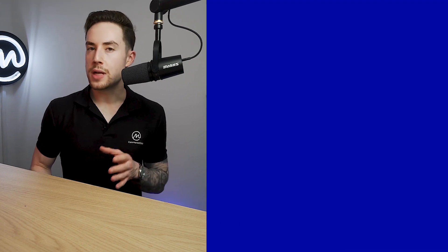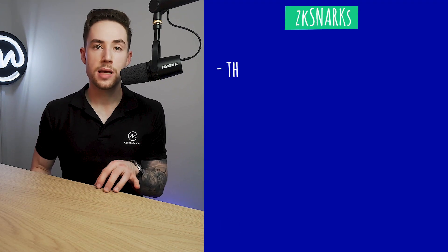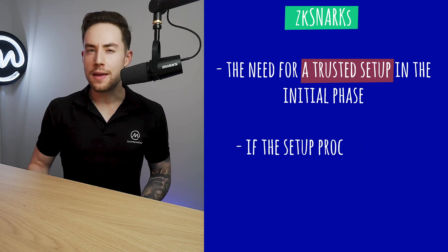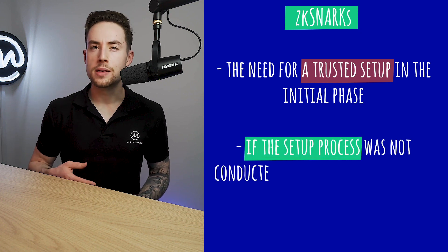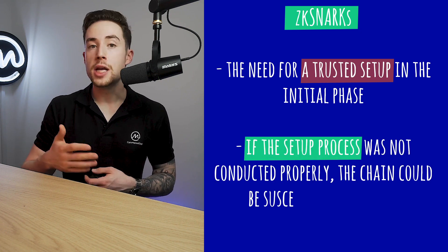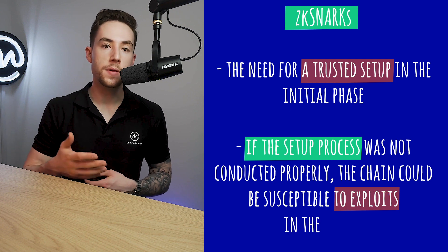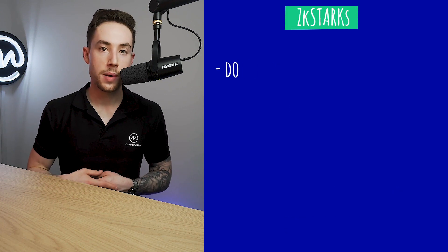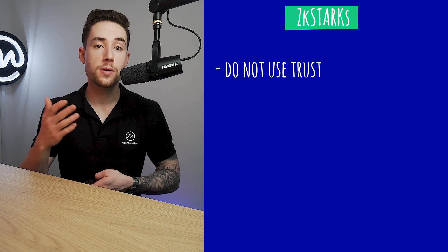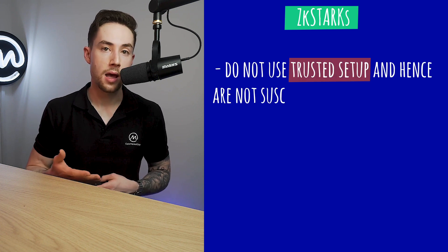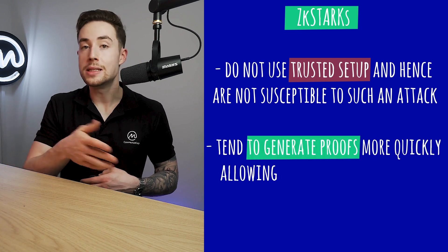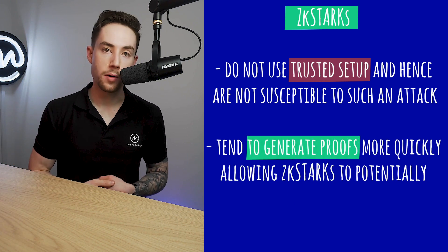One of the major downsides to ZK Snarks is the need for a trusted setup in the initial phase. If the setup process was not conducted properly, the chain could be susceptible to exploits in the future from malicious parties. ZK Starks do not use a trusted setup, and hence they are not susceptible to such an attack. Moreover, ZK Starks tend to generate proofs more quickly, allowing them to potentially scale better.